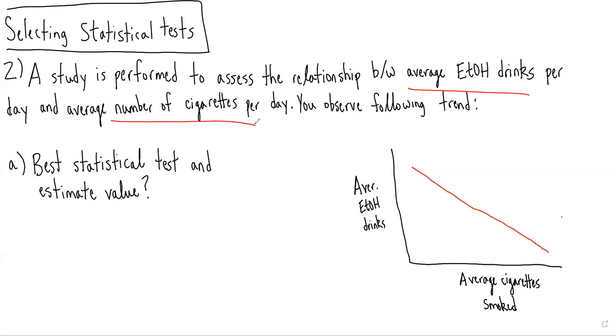And in this case, because we're just looking at the association and not thinking about how alcoholic drinks per day cause number of cigarettes per day or vice versa, we're just looking at how they're related to one another. We know we're dealing with a correlation analysis.